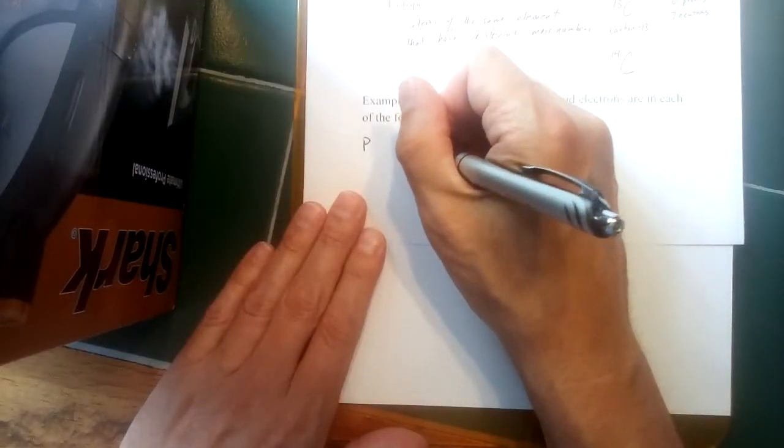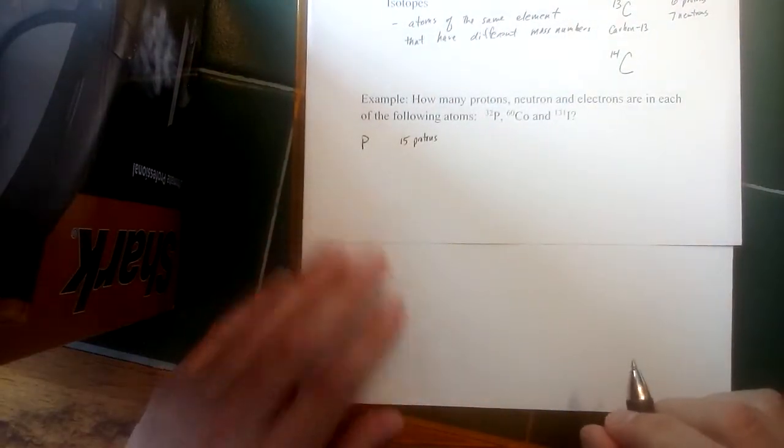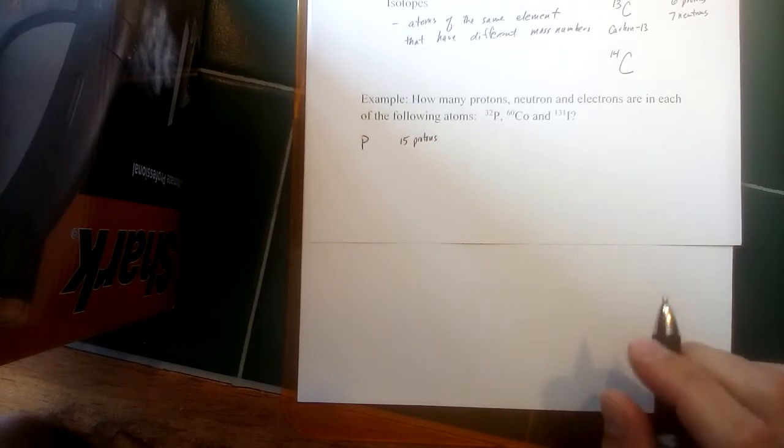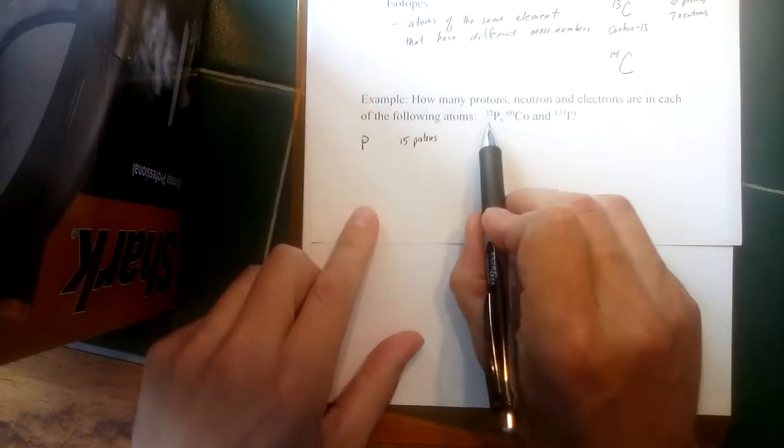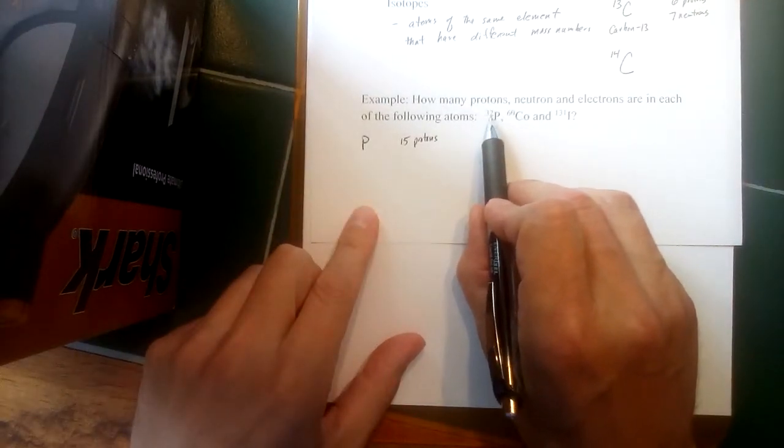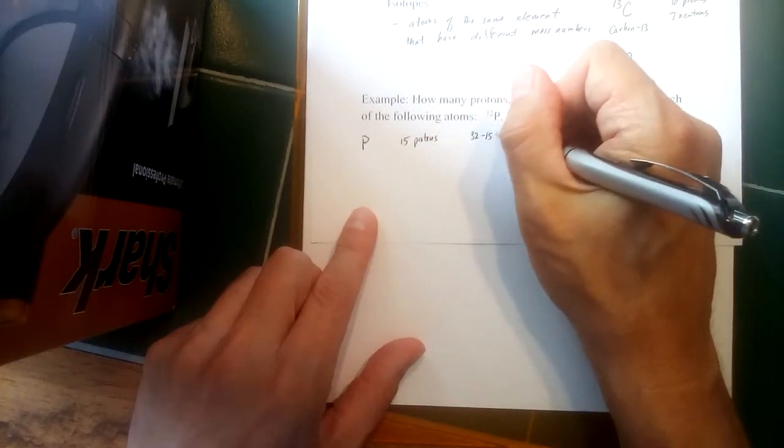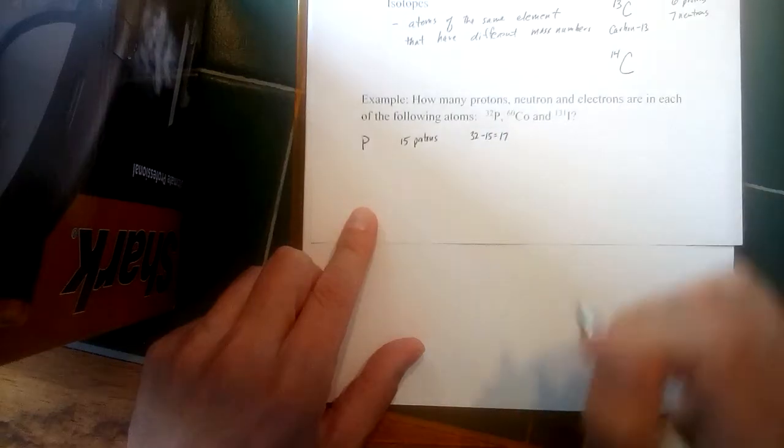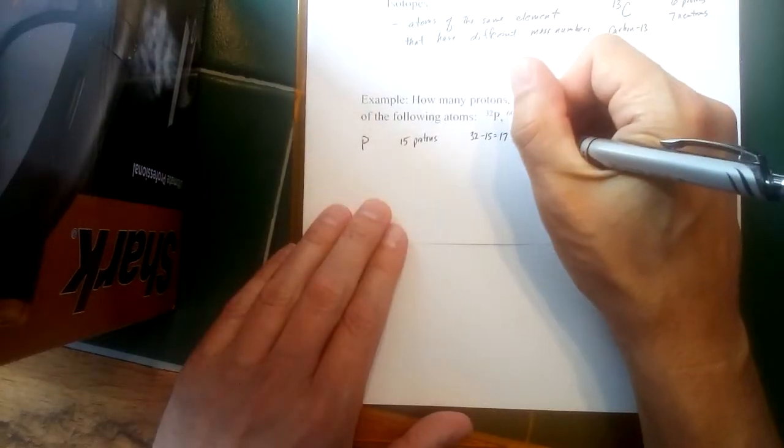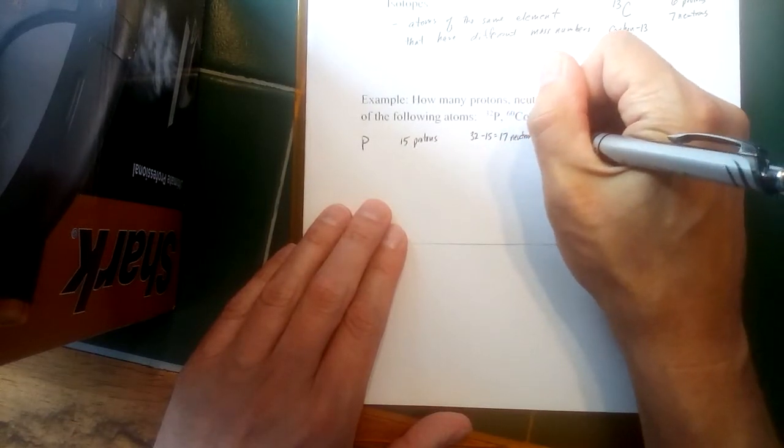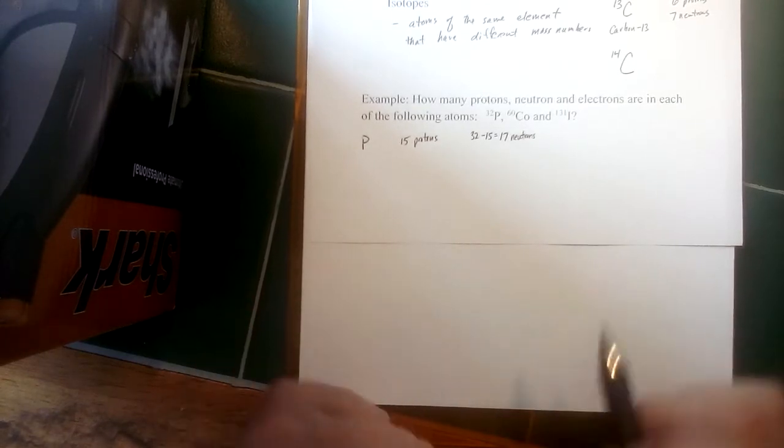So there are 15 protons in any atom of phosphorus. Once we know how many protons there are, we can use that in conjunction with the mass number to figure out how many neutrons there are. This superscript before the P, that 32, that's the mass number. If you take that mass number and subtract the number of protons, that will be how many neutrons there are. If there's 15 protons but the mass number of phosphorus 32, that means there must be 17 neutrons in that atom of phosphorus-32.